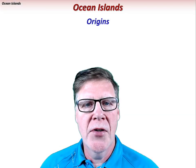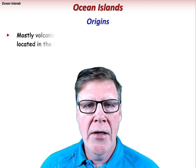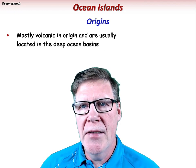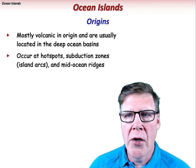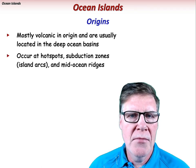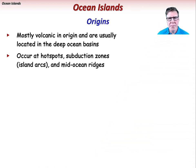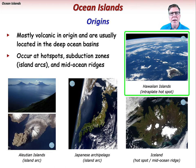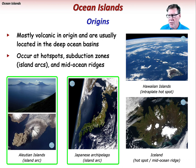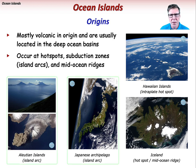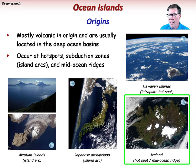Most ocean islands are volcanic in origin and are typically located in the deep ocean basins. They commonly occur at intraplate hotspots, subduction zones, and even mid-ocean ridges. The Hawaiian Islands are typical of the many intraplate hotspot ocean islands. The Aleutian Islands and Japanese islands represent island arcs built above subduction zones. And Iceland is located both on a hotspot and a mid-ocean ridge.